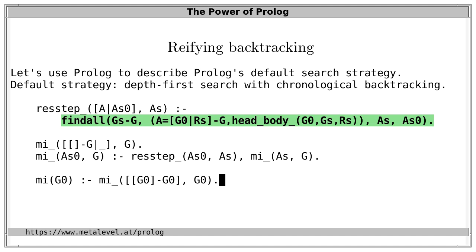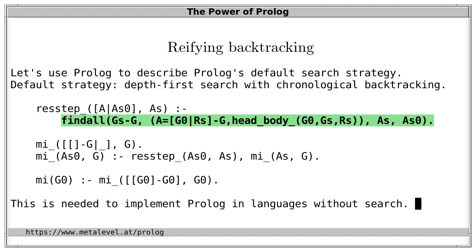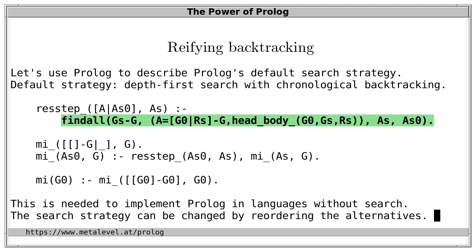Backtracking here is only used in the interface predicate to report answer substitutions. The core logic takes place in a single findall goal, which deterministically collects all alternatives. This meta-interpreter shows what is needed to implement Prolog in languages that don't have search and backtracking — essentially you only need to emulate findall. This may not be very efficient, but it shows the principle. Reification is also useful to study and explain how otherwise implicit mechanisms work, in addition to the usual advantage of being able to modify how they work. For example, we can change the search strategy by reordering the alternatives, or implement breadth-first search.